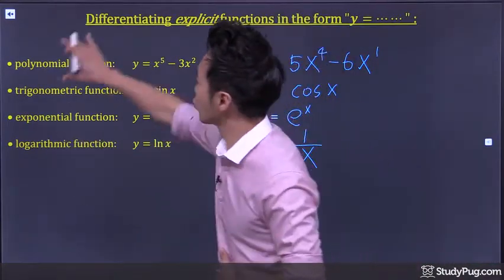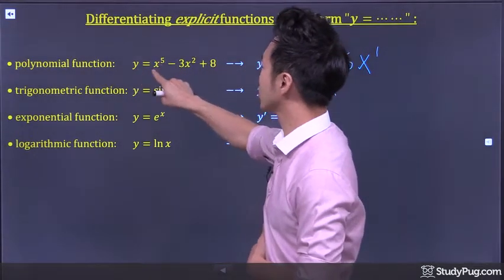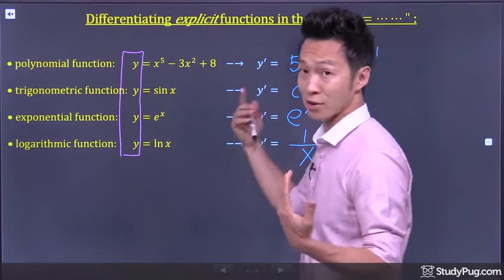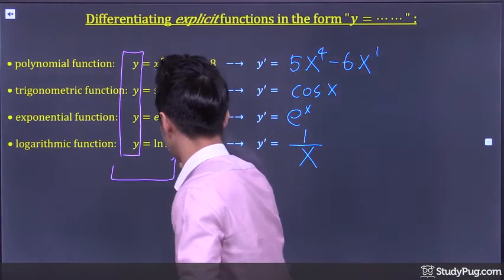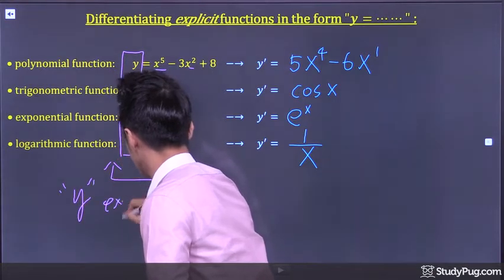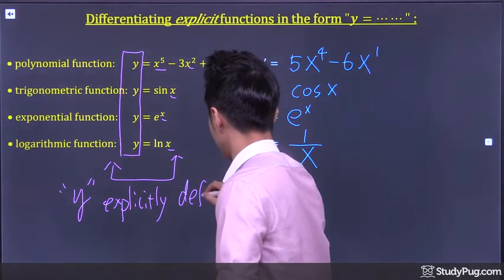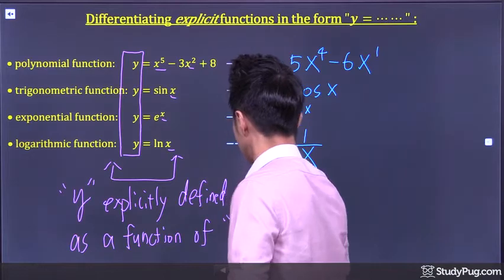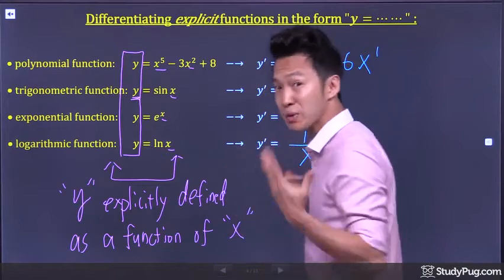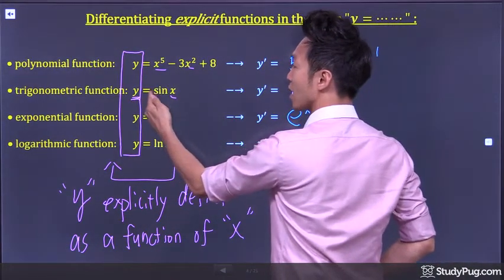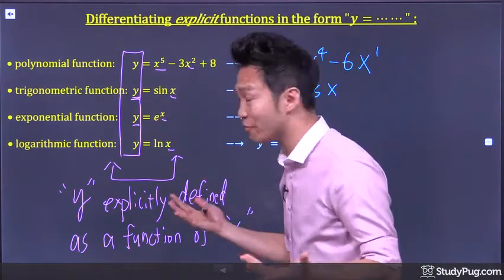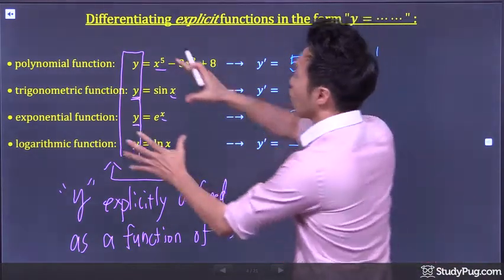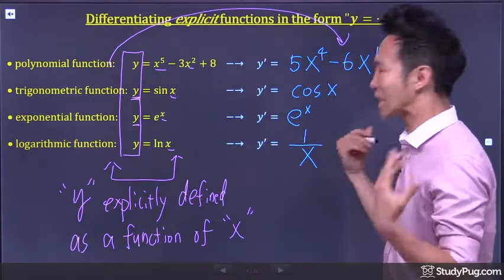As you can see, all of the functions we've dealt with so far explicitly define one variable in terms of another. In this case, the functions all have y explicitly defined as a function of x. For example, y is explicitly — meaning obviously — defined as an exponential function of x. The process of finding the derivative of an explicit function is called explicit differentiation.